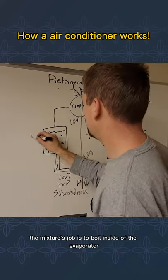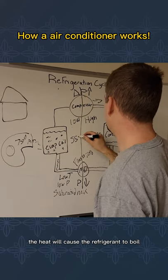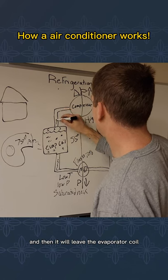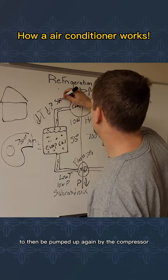The mixture's job is to boil inside of the evaporator and absorb heat from the house. The heat will cause the refrigerant to boil, and then it will leave the evaporator coil as a low-temperature, low-pressure, superheated vapor to then be pumped up again by the compressor.